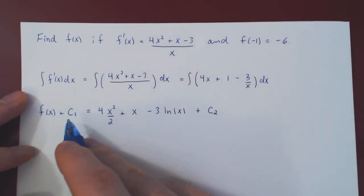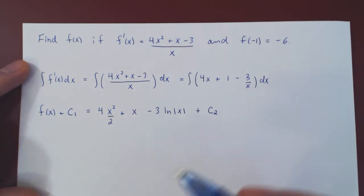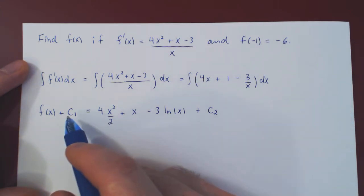So now we have f(x) up to two arbitrary constants. The first question that you should ask: do we need two arbitrary constants? And the answer is no, and let me show you why.